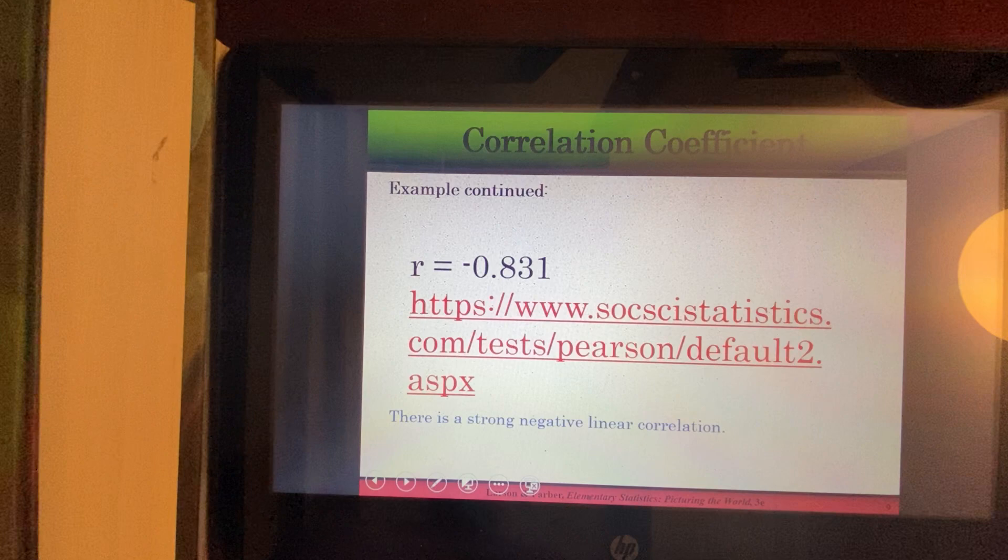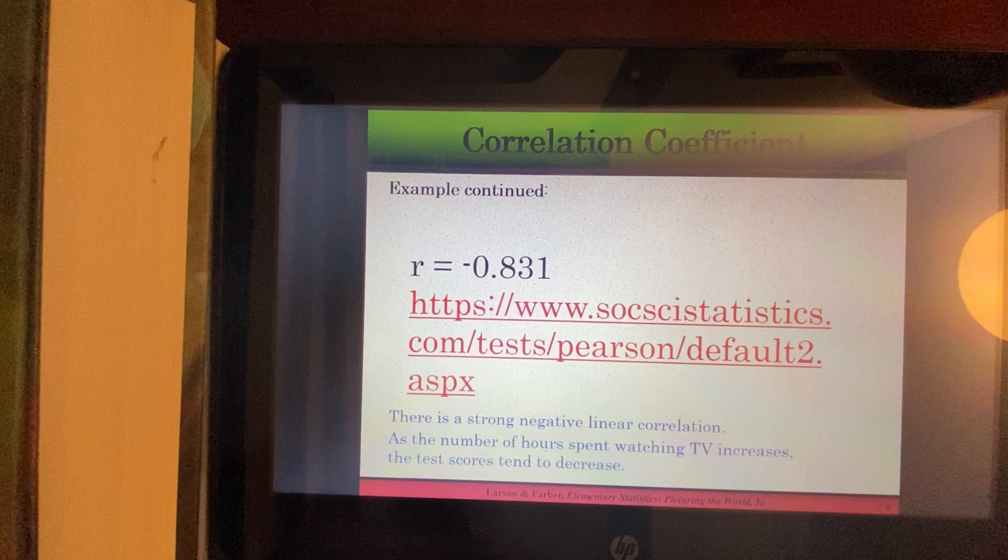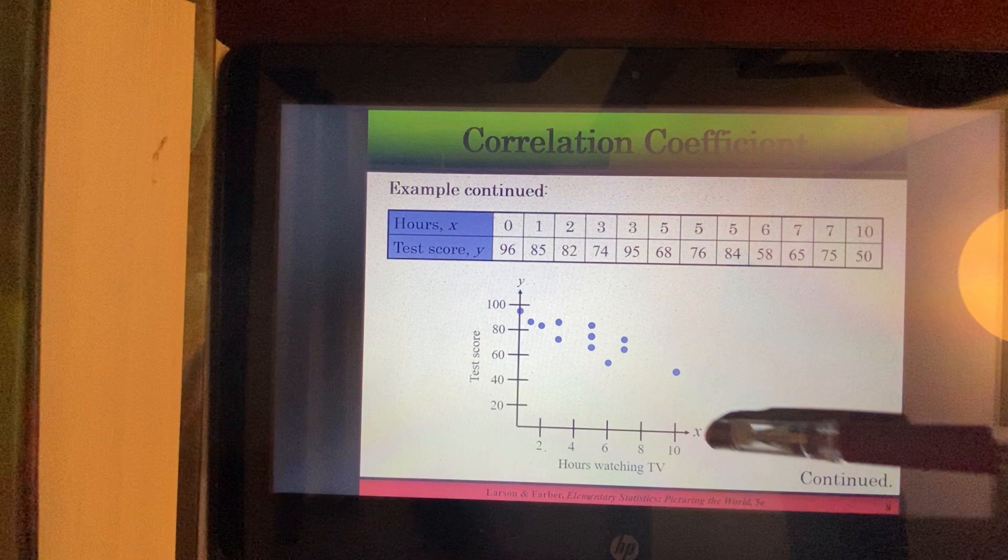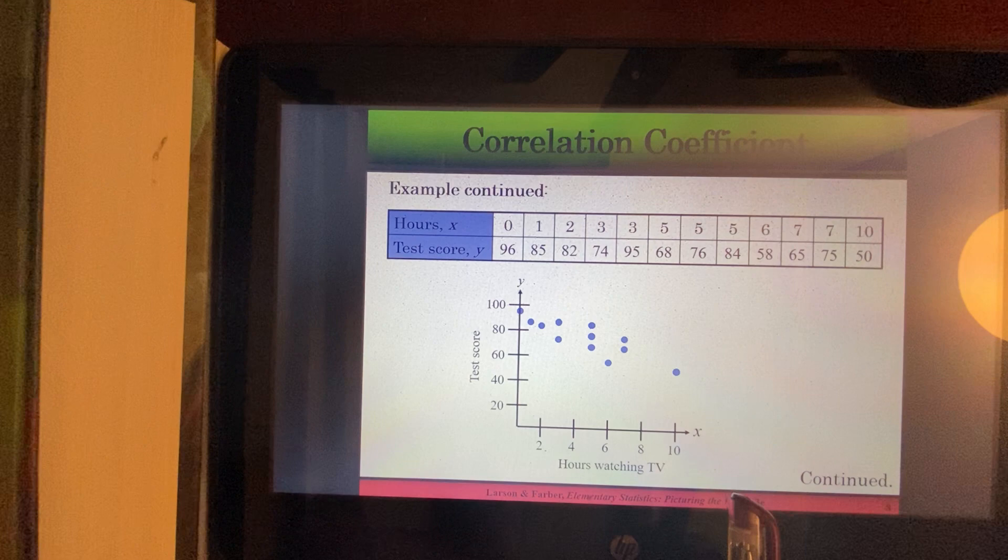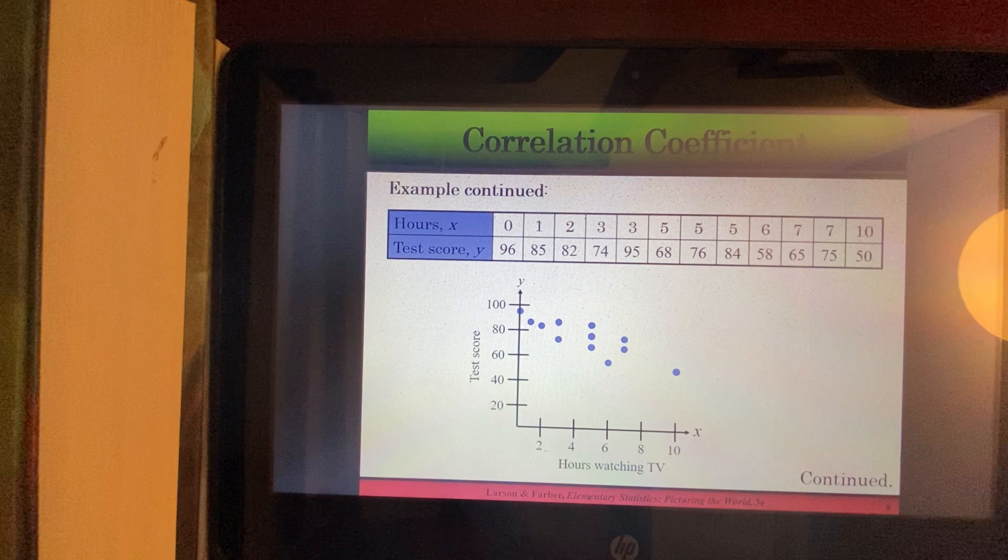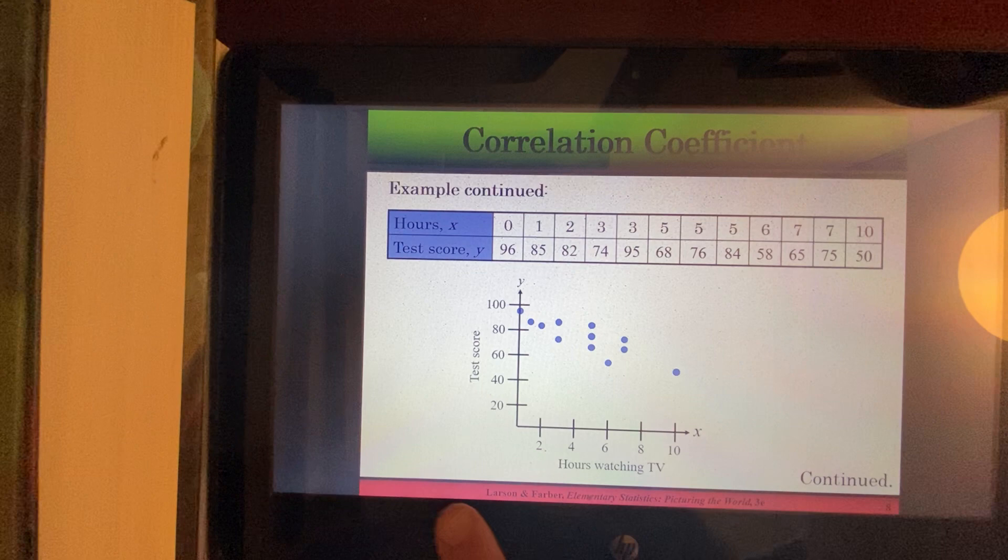Okay, we need to calculate a correlation coefficient for the data. And let's just look back here for a second. It looks like there is a negative correlation as X is increasing. So as the number of TV hours are increasing, it looks like the test scores, your Y's, are decreasing. So I would expect R, the correlation coefficient, to be negative. And R is negative 0.831.